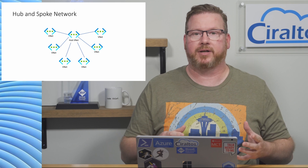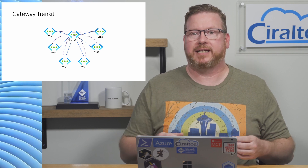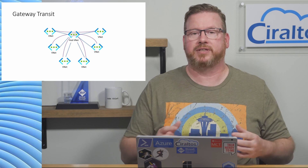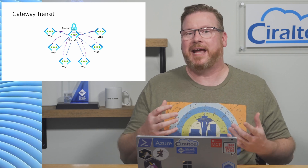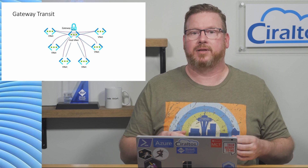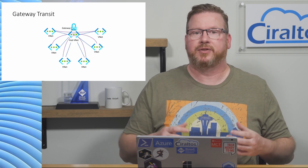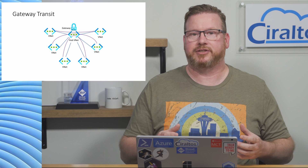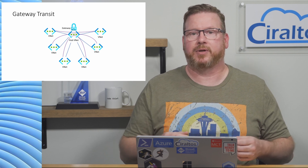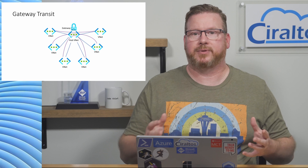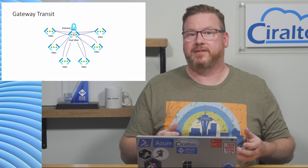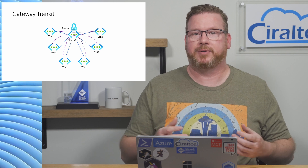Instead, we'll use a hub and peer each virtual network with that hub to create a hub and spoke network. We'll use a gateway transit connection to allow network traffic to flow from one spoke to the other. Gateway transit works by adding a gateway to the hub virtual network. The gateway on the hub learns about the spoke subnets through the peering relationships, and the VNet gateway routes traffic between each spoke, creating the gateway transit relationship. This example uses a VPN gateway as the routing device in the hub.